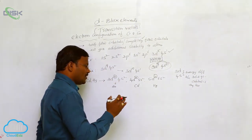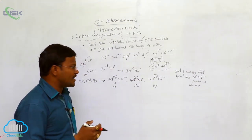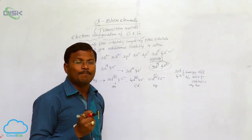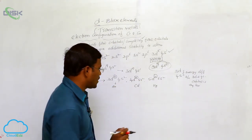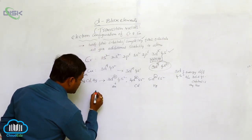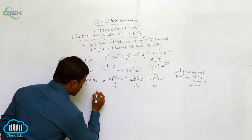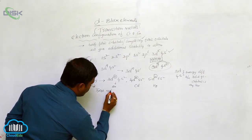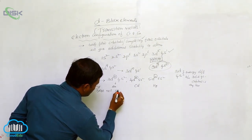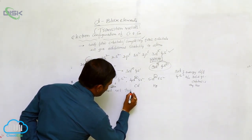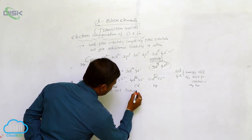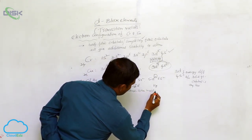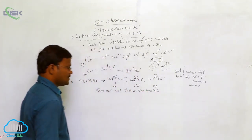In whatever atomic state or ionic state, zinc, cadmium, and mercury have completely filled d-orbitals. This is the reason why these are not transition metals or transition elements.